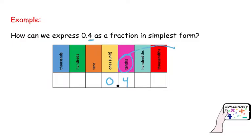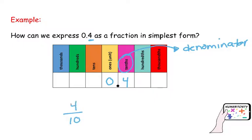This place value is going to be my denominator. So, to convert 0.4 to a fraction, my denominator is going to be a tenth. And the number is 4. So this reads 4 tenths.